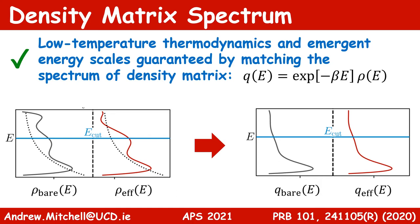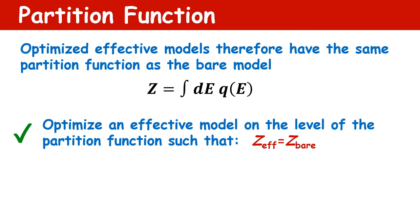We define the spectrum of the density matrix q(E) as being related simply to the density of states ρ(E) times the Boltzmann factors e^{-βE}. On the left-hand side, I'm plotting some hypothetical density of states for bare and effective models, and the dotted line is the Boltzmann weighting. This gives us the spectrum of the density matrix plotted on the right-hand side. What we'd like is that the spectrum of the density matrix, up to some cutoff E_cut, matches in bare and effective models — we don't really care about what's happening at higher energies and temperatures.